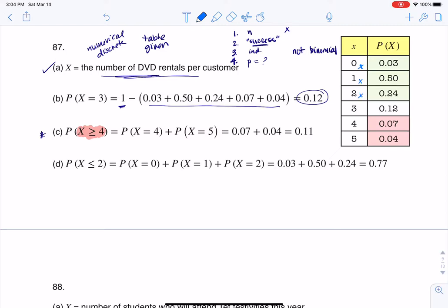Two and three are also not greater than or equal to four. Four is greater than or equal to four. And five is greater than or equal to four. So I want to include those two numbers. And that's why you see me highlighting them in red. I added those two numbers together. And my probability was 11%.